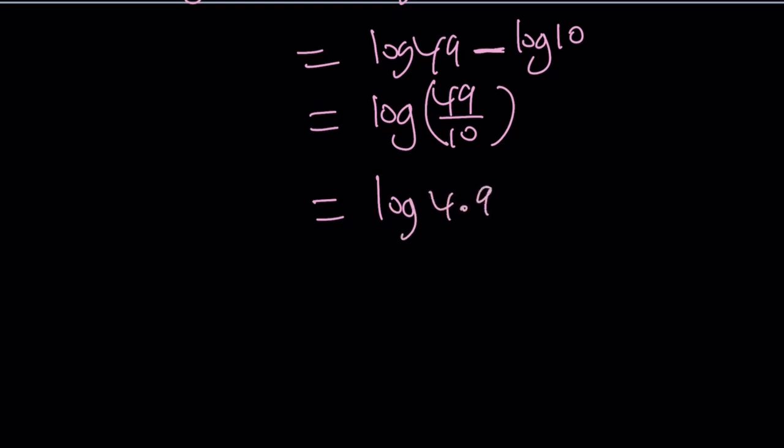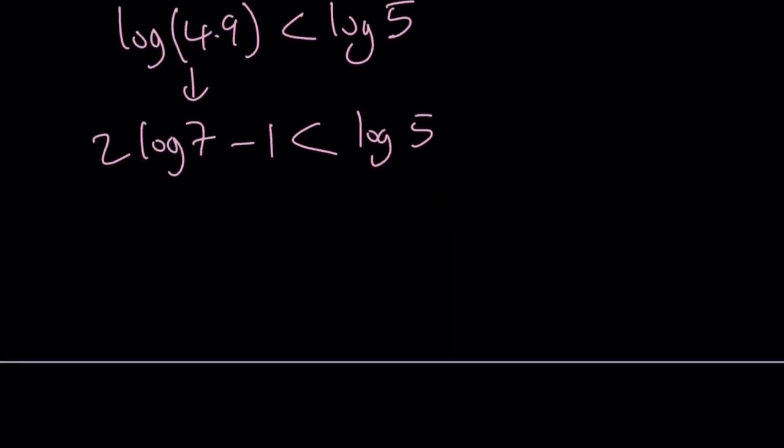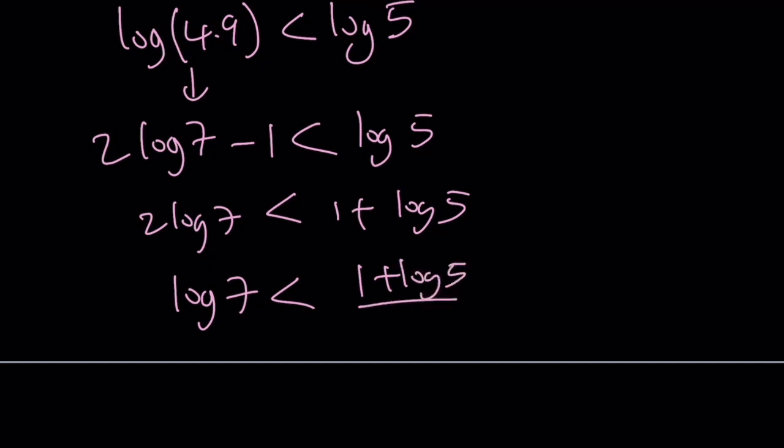So this is log 4.9. What am I going to compare it to? Of course, to log 5. Because log 4.9 is less than log 5. So this was 2 log 7 minus 1. And this is just log 5. Let's add one to both sides. 2 log 7 is less than 1 plus log 5. Divide both sides by 2 and you're going to get log 7 is less than 1 plus log 5 divided by 2.